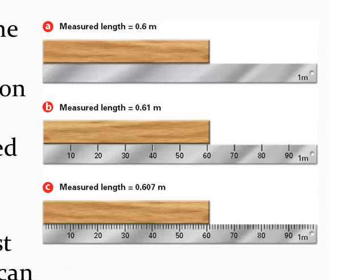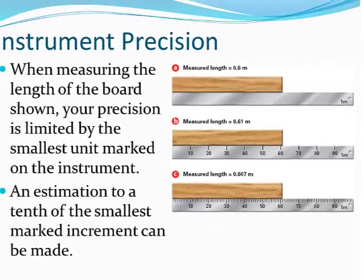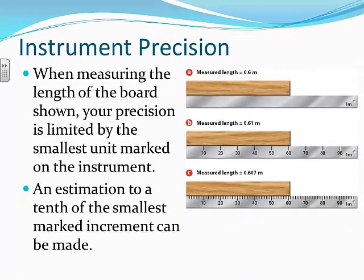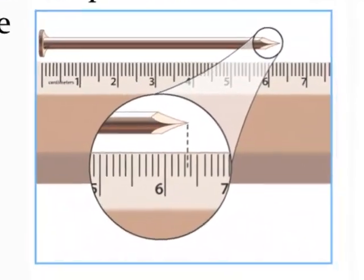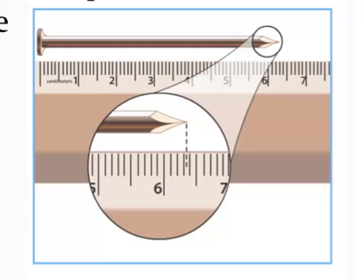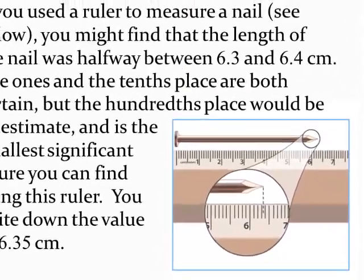Small differences between your measurement and a neighbor's using the same instrument are expected, but they should still be very close. If you used a ruler to measure a nail and found it halfway between 6.3 and 6.4 centimeters, the ones and tenths places are known with certainty, but the hundredths place is an estimate — the smallest significant figure with this ruler. You would write down the value as 6.35.